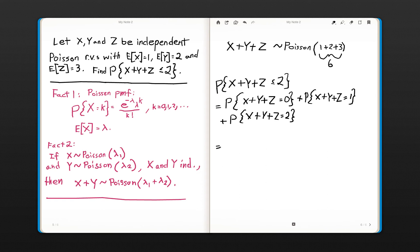So we can now use the probability mass function here with the appropriate rate lambda equaling 6. So this is simply e to the negative 6, working this piece first where X plus Y plus Z equals 0, lambda to the 0 power divided by 0 factorial,